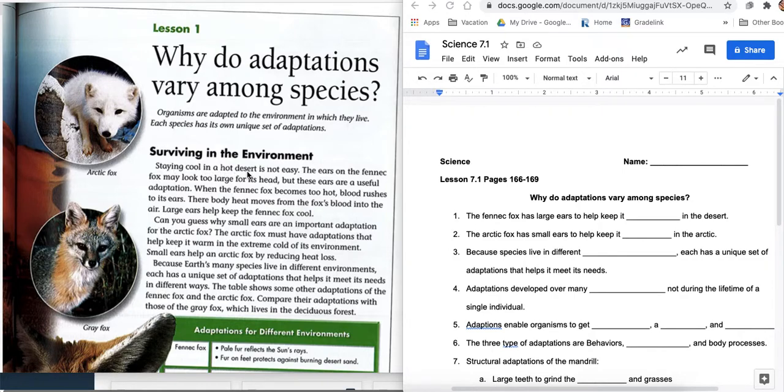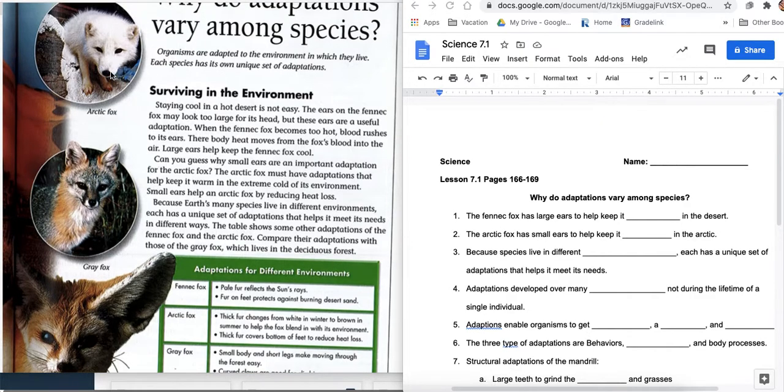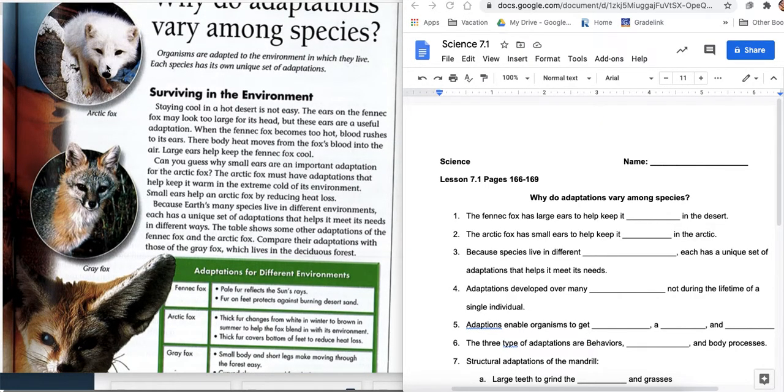Staying cool in a hot desert is not easy. The ears on a fennec fox may look too large for its head. This is your fennec fox down here with these huge ears. But these ears are a useful adaptation. When the fennec fox becomes too hot, blood rushes to its ears. Their body heat moves from the fox's blood into the air. Large ears help keep the fennec fox cool. Can you guess why small ears are an important adaptation for the arctic fox? The arctic fox must have adaptations that help keep it warm in the extreme cold of its environment. Small ears help an arctic fox by reducing heat loss. Fennec fox helps keep it cool in the desert and the arctic fox helps keep it warm in the arctic.